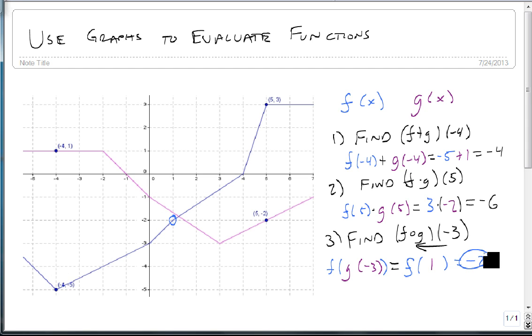So now we know how to use our graph. Either find the matching points and replace them with their outputs, then do the operator. Or if it's composition, use one to find its output, plug that in as my input for my next one and get my output.